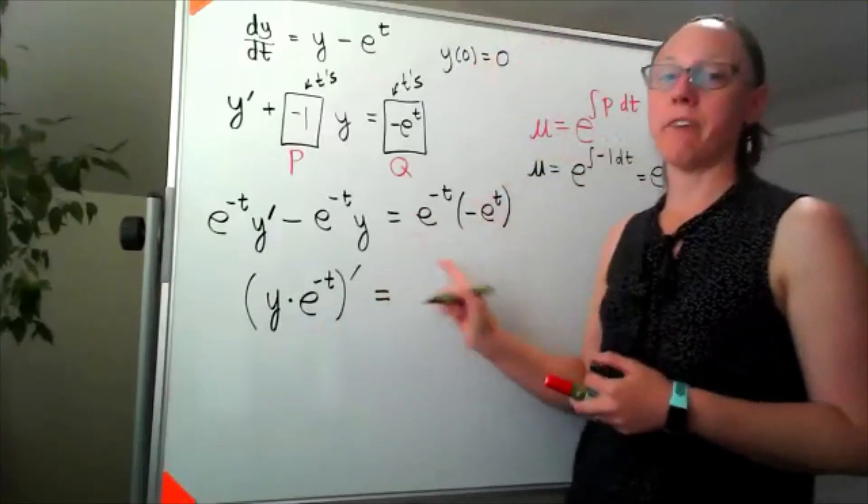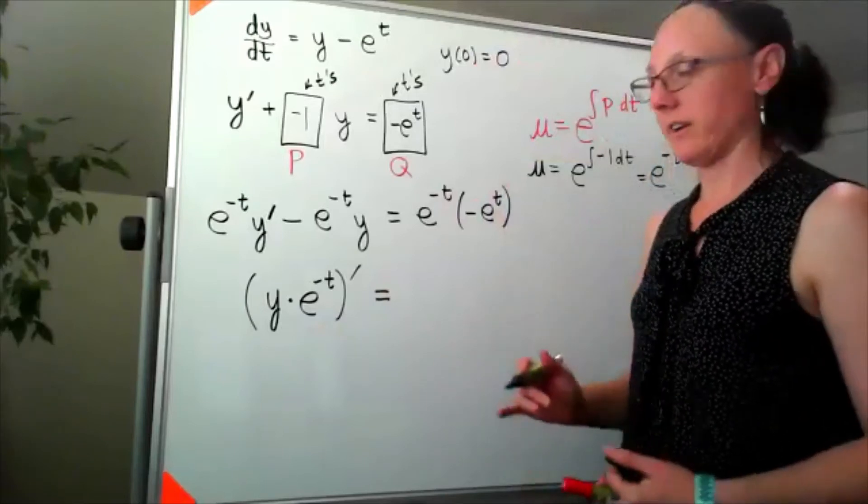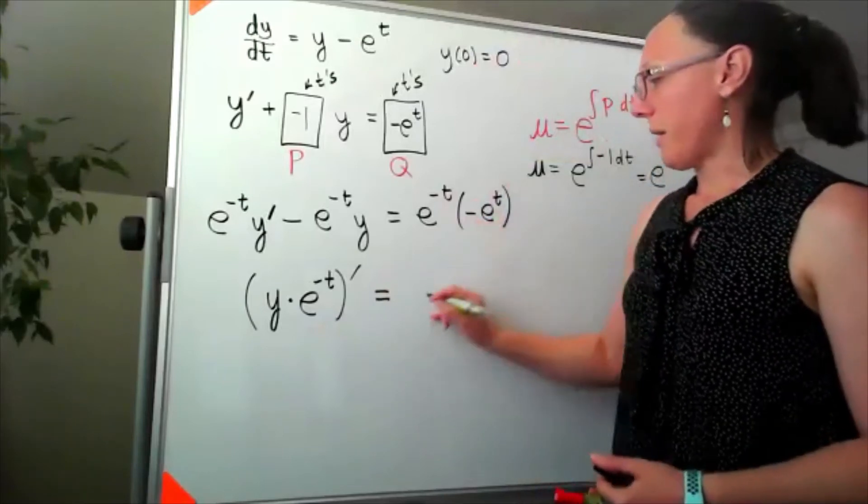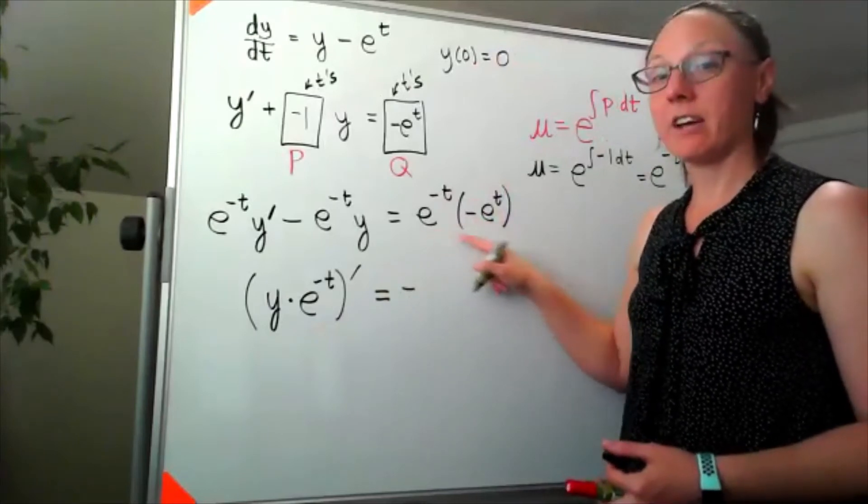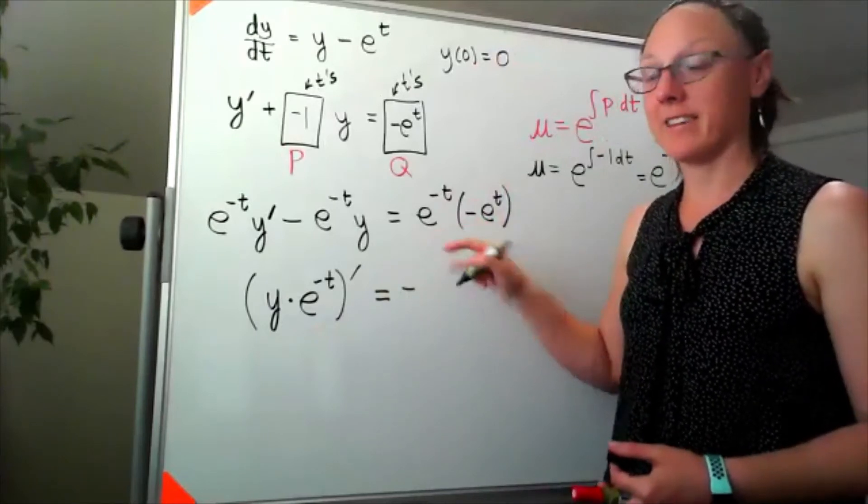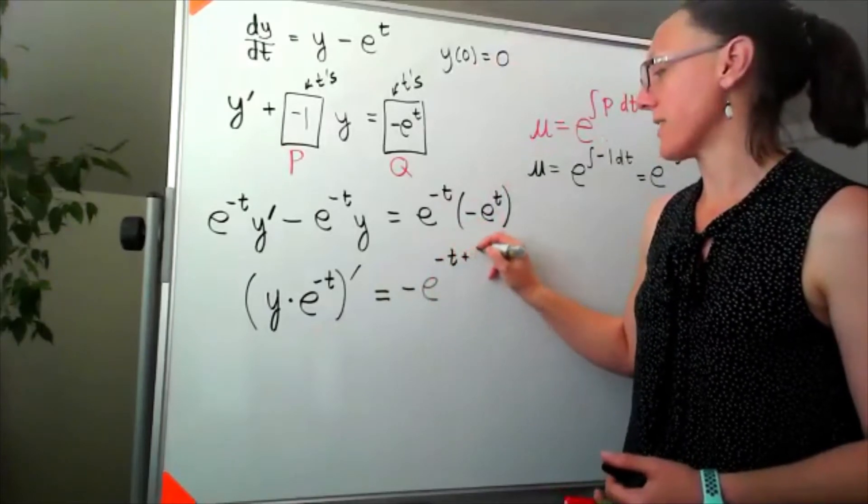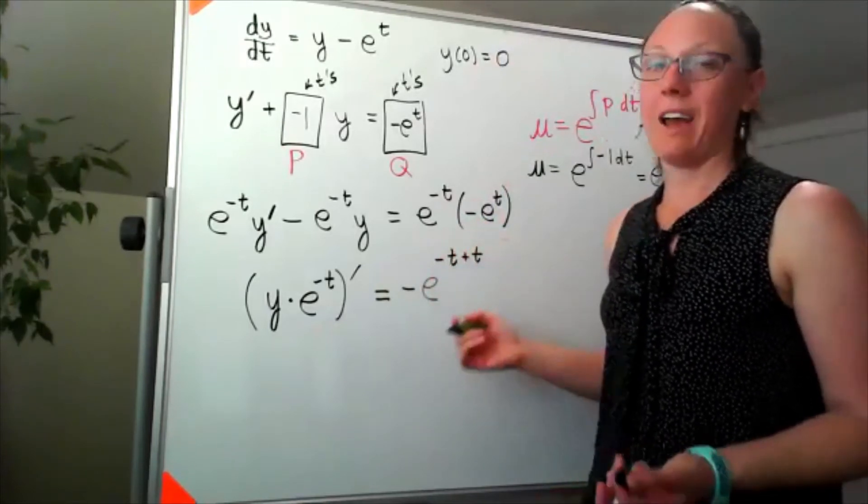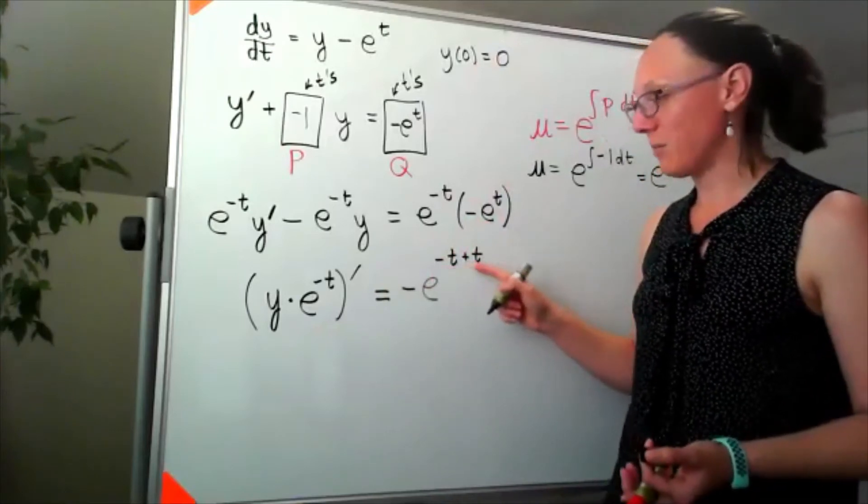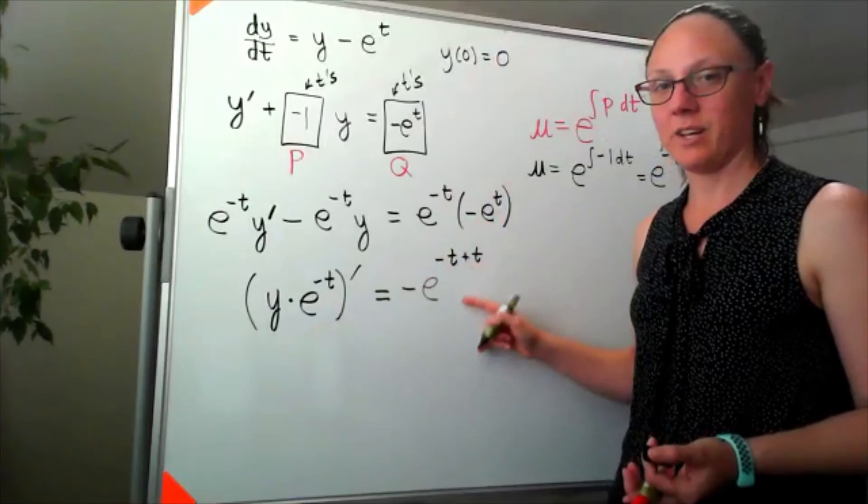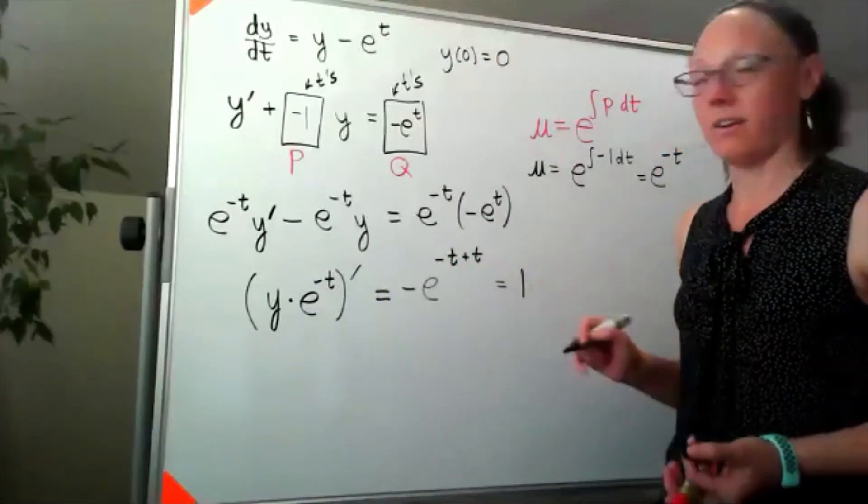Then I'm going to simplify whatever's on the right hand side before we do our next step. Well, that minus sign I can bring out in front here because I've got two things multiplied together that have the same base. I can rewrite that as e to the negative t plus t. Well, I've made this first one convenient for us. Negative t plus t is going to give me zero, and e to the zero means I really just have one over here.